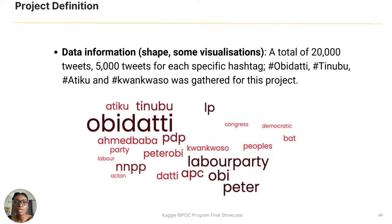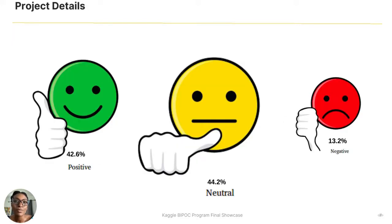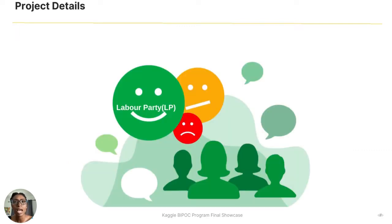For this particular project, the criteria used was hashtags, and a total of 20,000 tweets were gathered — 5,000 each for the four different parties I chose to analyze. The data reveals that 44.2% of people are on neutral grounds regarding the election, while 42.6% are positive and 13.2% have negative opinions. Of the 42.6% positive sentiment score, Labour Party has the highest sentiment score.